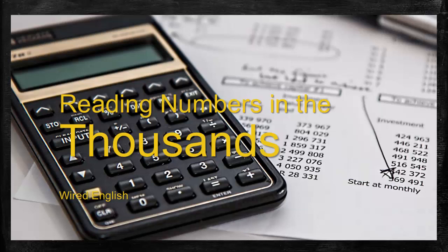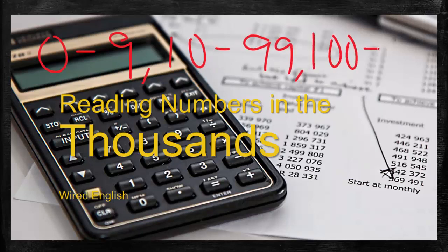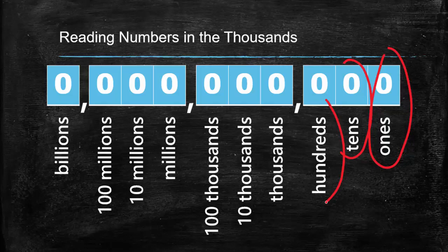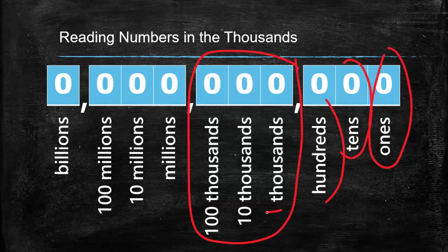Reading numbers in the thousands. You all know how to read smaller numbers from 0 to 9, from 10 to 99, and probably 100 to 999. What about numbers bigger than that? Let's talk about the thousands. It's important that we understand place value. At the far right we have the ones place, then tens, then hundreds — which we're all familiar with. The next three digits are the thousands: one thousands, ten thousands, and hundred thousands.